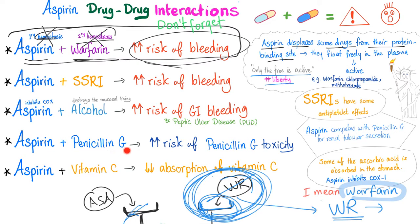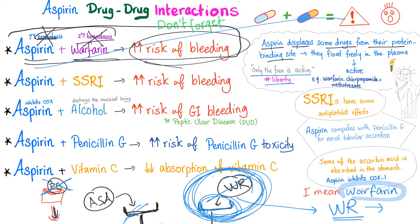Aspirin plus penicillin G increases the risk of penicillin G toxicity. Why? Because aspirin competes with penicillin G for renal tubular secretion. Normally, you eliminate penicillin G in the urine via tubular secretion. But when aspirin is present, it competes for the same secretion receptor. Penicillin G can no longer be excreted into the urine, so it stays in the bloodstream — increasing penicillin G toxicity.